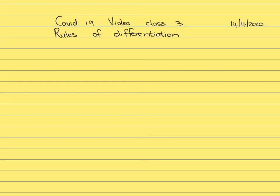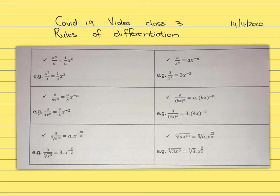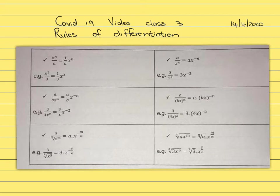Before we look at the rules, I want you to remind yourself of the basic principles of exponents. If you look at these basic rules, you'll see that x to the power n over a can be written as 1 over a times x to the power n. For example, x to the power 2 over 3: there's a 1 in front, so it's 1 over 3 times x to the power 2.